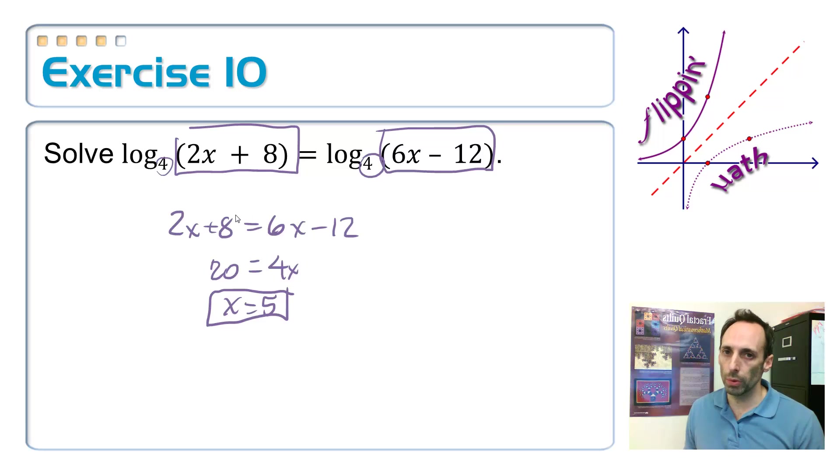Now, a key thing here for logarithms is that there's a domain issue. What you're taking the log of, this thing that's inside the parentheses, must always be positive.